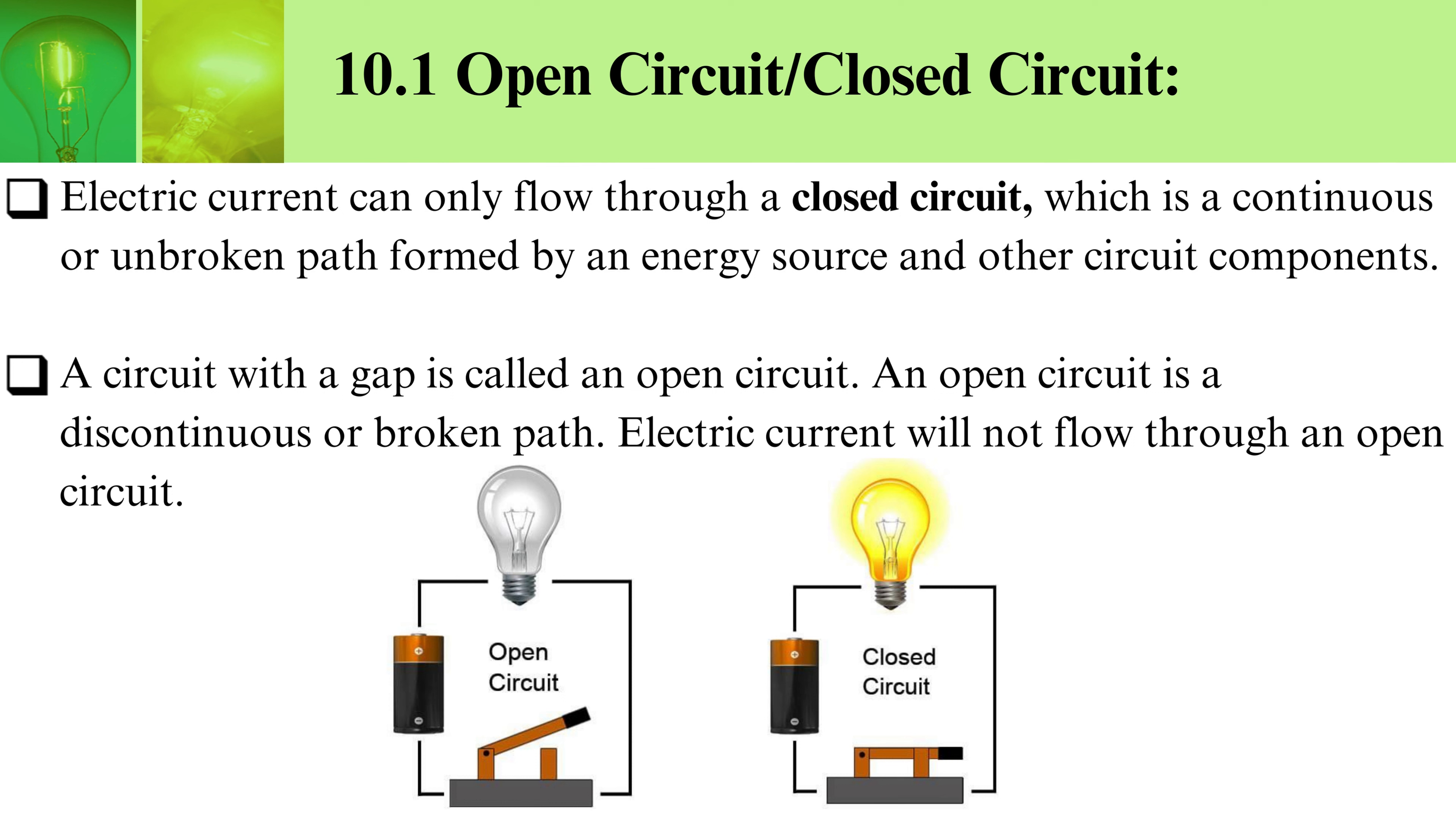Electric current can only flow through a closed circuit, which is a continuous or unbroken path formed by an energy source and other circuit components.